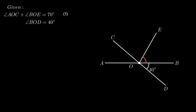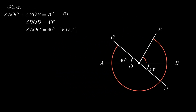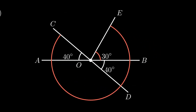We need to find the value of angle BOE and the reflex of angle COE. From the figure, angle AOC equals 40 degrees as vertically opposite angles are equal. Using equation number 1, angle BOE equals 70 minus angle AOC, which is simplified as 70 minus 40 degrees, which is equal to 30 degrees.